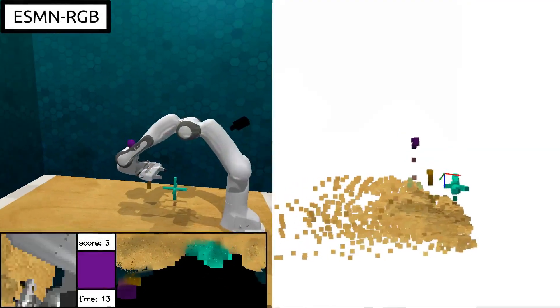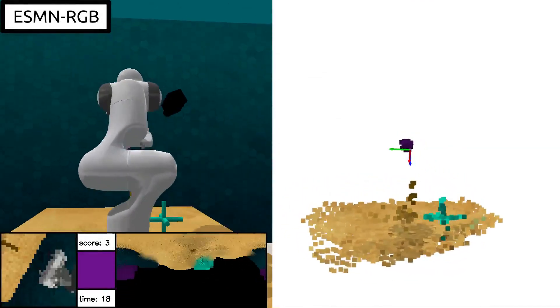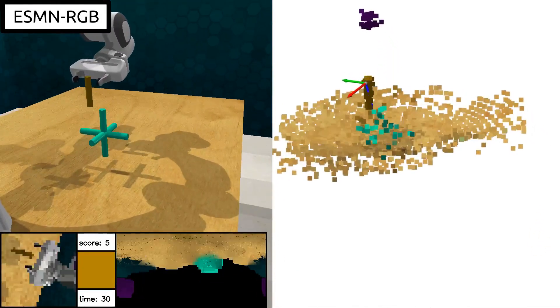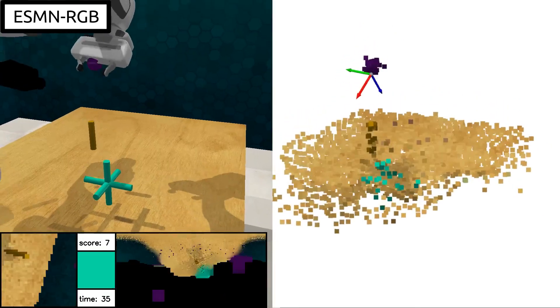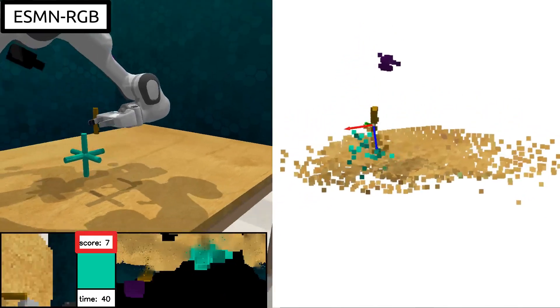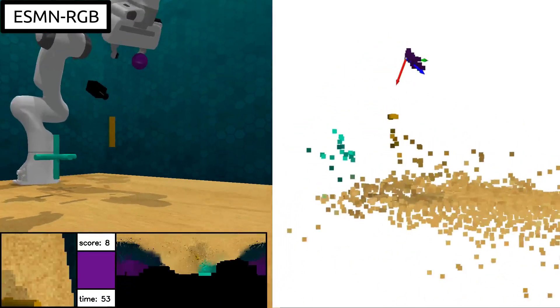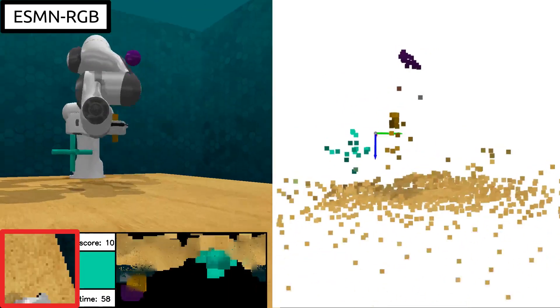Here we show an example of the manipulator reacher task, with a freely moving external camera, conditioned on target color, and trained again using imitation learning. The ESMN RGB agent again achieves a high score, while the baseline methods reach less than one target per episode on average, failing to interpret the images from the external camera.